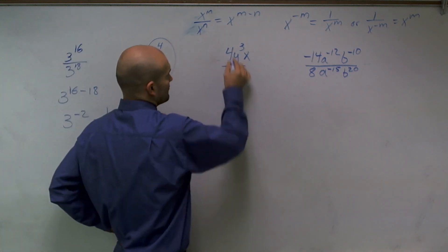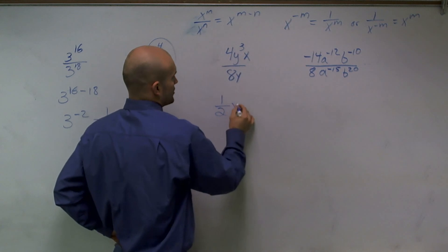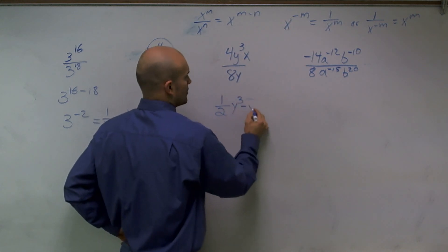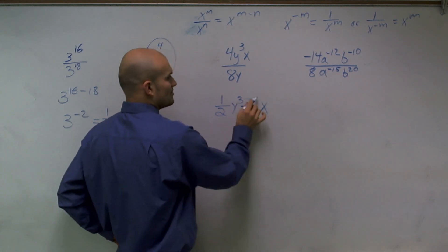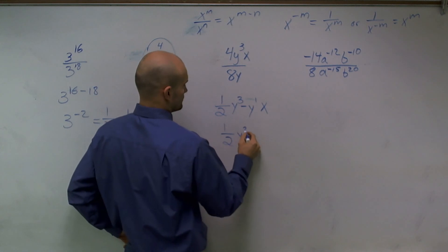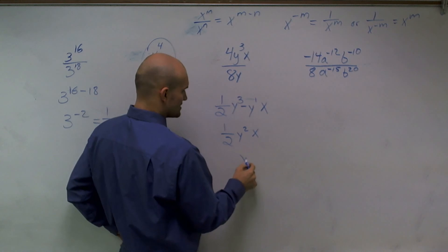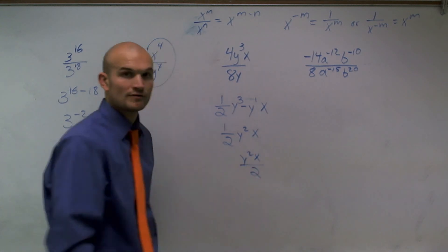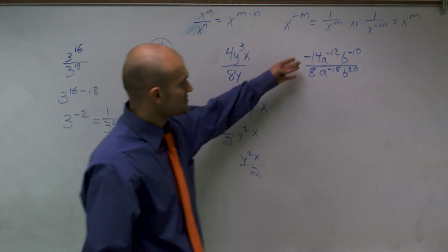This problem, I have 4 eighths, which can be rewritten as 1 half. y to the third minus y to the first is y squared, times x. Therefore, I can rewrite this as y squared times x over 2. Both of these can be written either way.